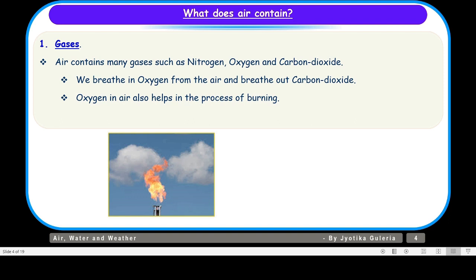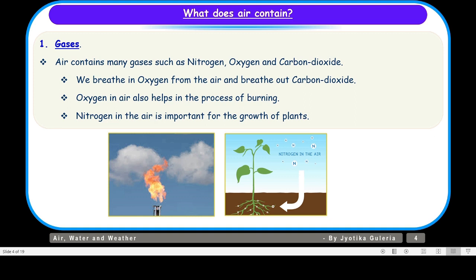Oxygen in air also helps in the process of burning. That means in the absence of oxygen, the process of burning will not happen. And nitrogen in the air is important for the growth of plants. Nitrogen is also added in the soil as fertilizer for plant growth.